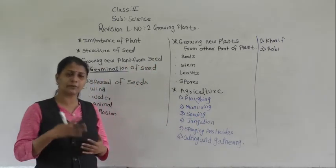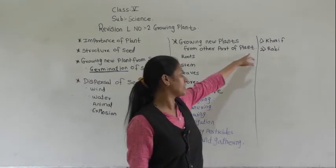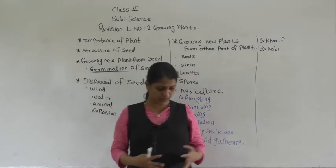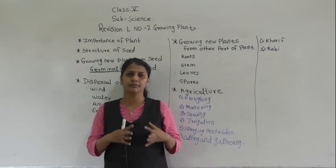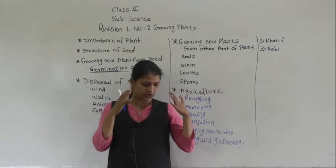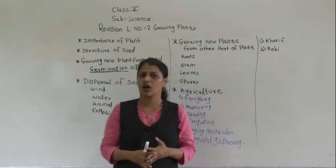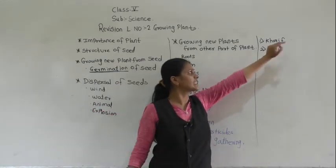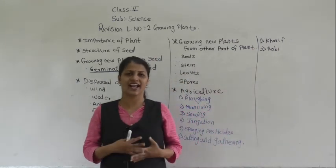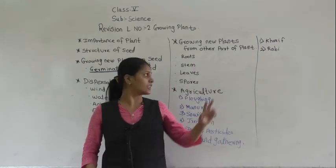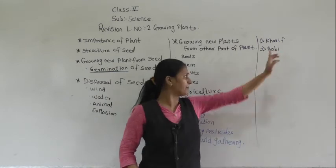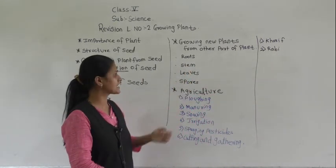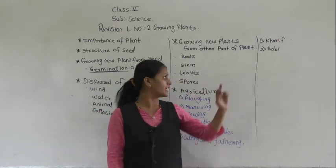We also discussed the two main types of crops: Kharif and Rabi. Kharif crops are crops grown from June to October. Examples of Kharif crops are rice and maize.